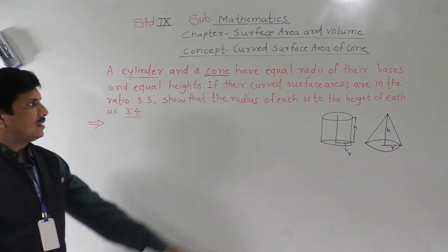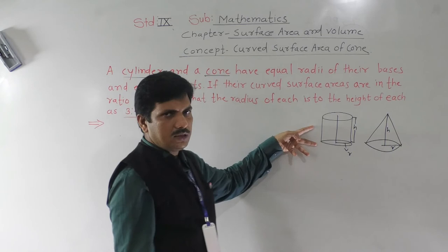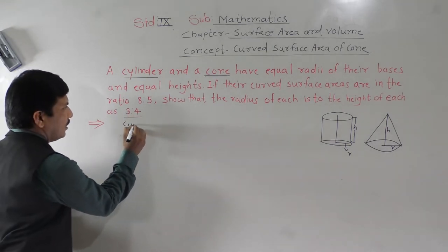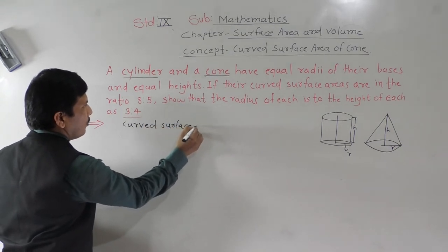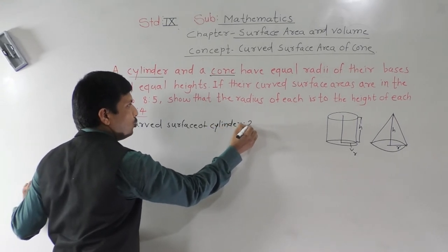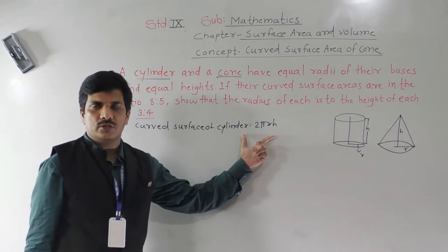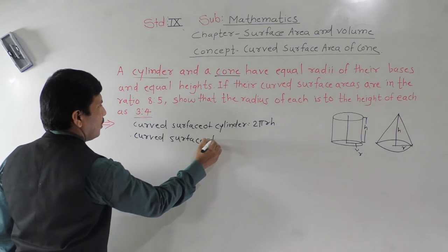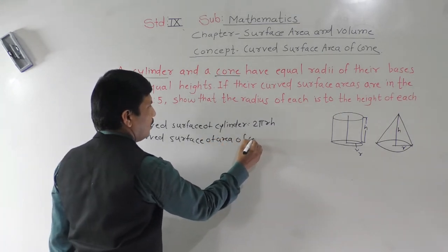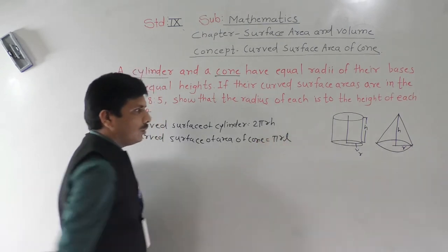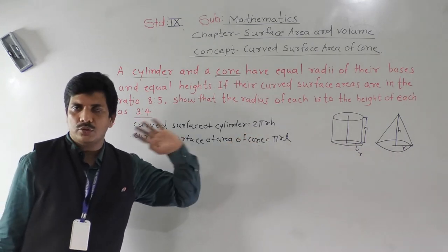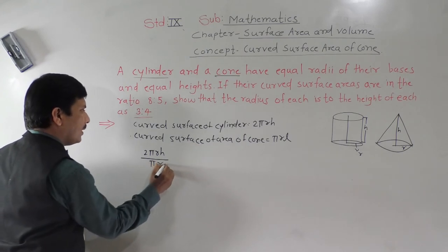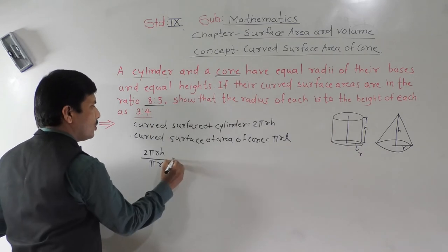Their curved surface areas are in the ratio 8 to 5. Curved surface area of cylinder = 2πrh. Curved surface area of cone = πrl. The ratio gives us: (2πrh) ÷ (πrl) = 8 ÷ 5. Since pi and radius are the same for both and cancel out, we get: 2h ÷ l = 8 ÷ 5, which gives h ÷ l = 4 ÷ 5.